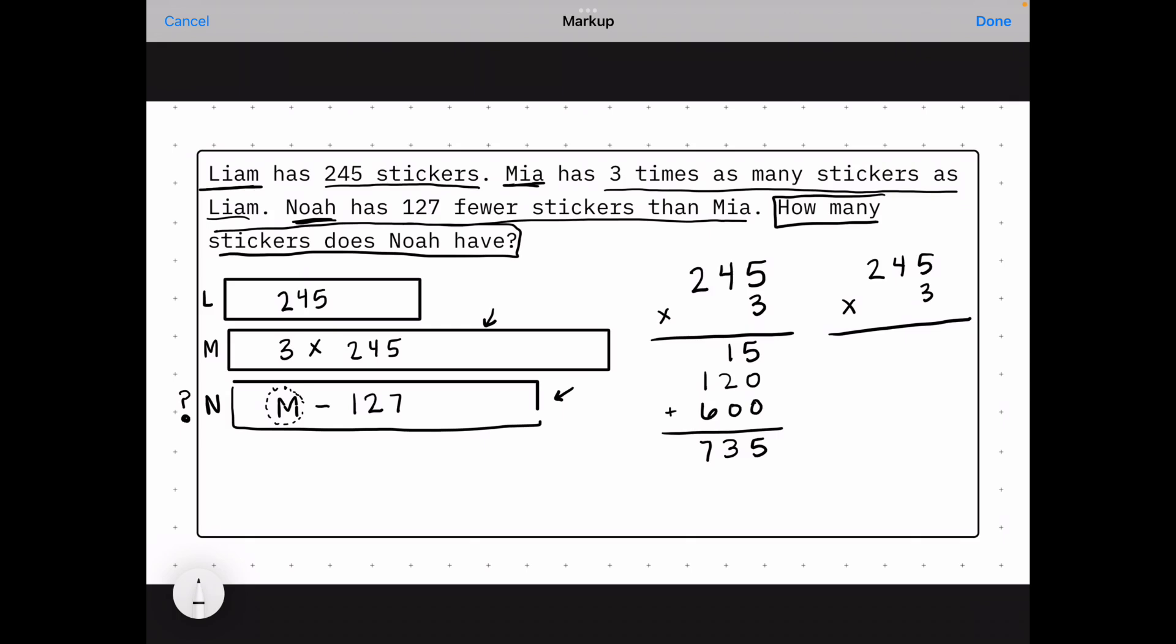Standard algorithm, 3 times 5 is 15, carry my 1, 3 times 4 is 12 plus 1 is 13, carry my 1, 3 times 2 is 6 plus 1 is 7. So same thing here, 735. So I now know that Mia has 735 stickers.